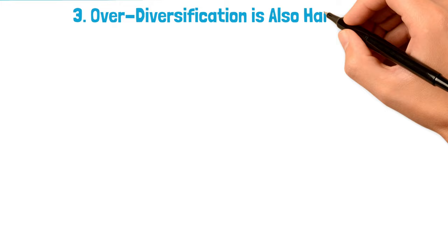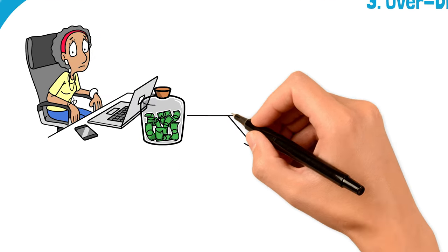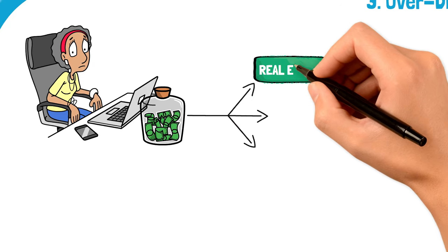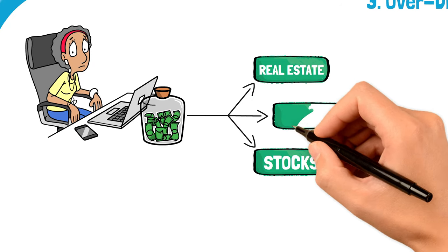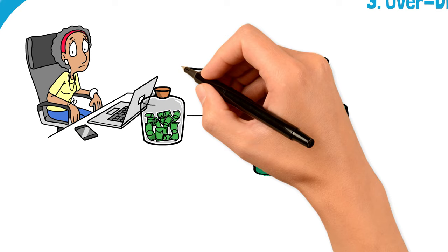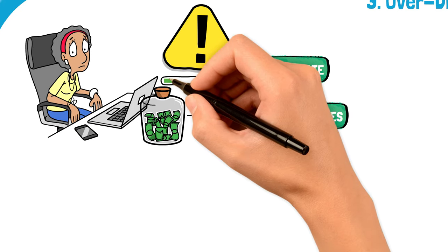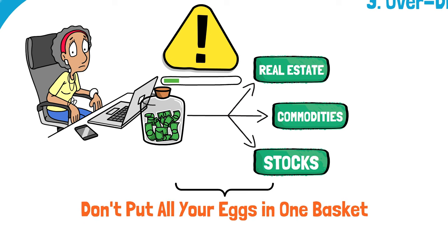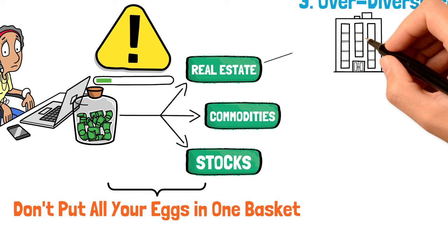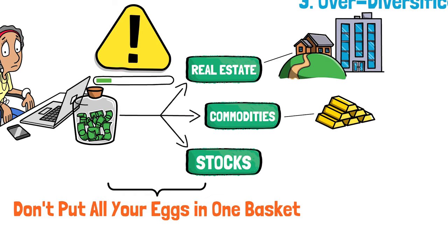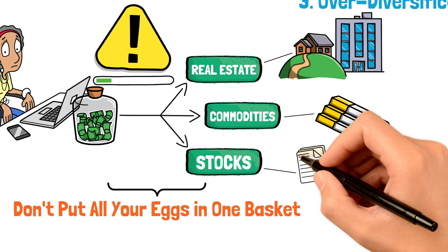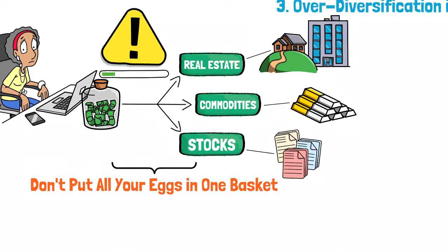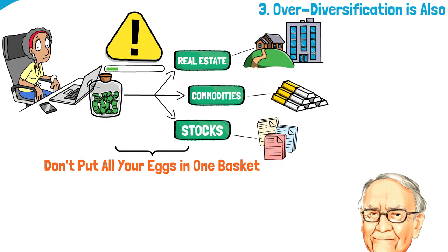Now let's get into the heart of today's chat—the big no-no in investing that Warren Buffett keeps warning us about. You've probably heard the term diversification thrown around a lot. Diversification is a risk management strategy that mixes a variety of investments within a portfolio. By spreading investments across various financial instruments, industries, and other categories, it aims to reduce the impact of a single adverse event.